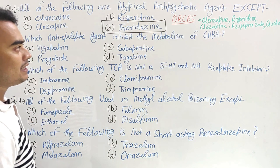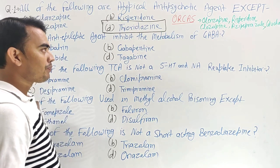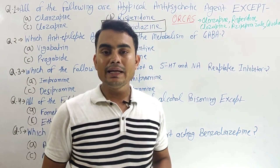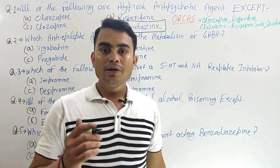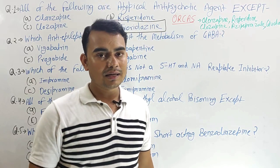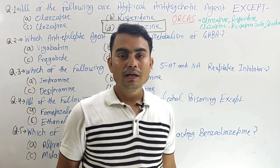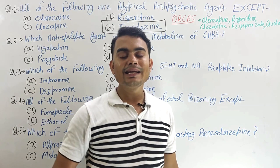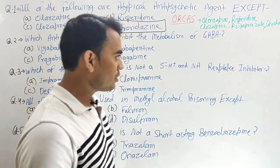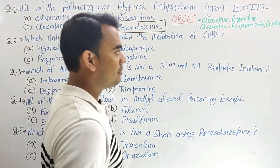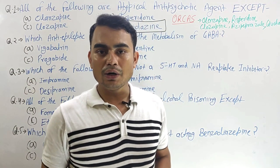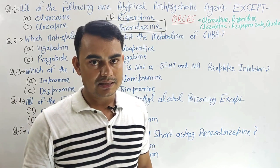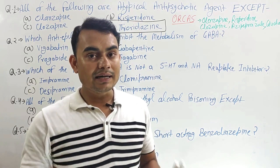Next question: which antiepileptic agent inhibits the metabolism of GABA? In epilepsy treatment, we mainly find three drug classes: drugs that increase GABA activity, reduce sodium activity, and inhibit calcium activity. Under the GABA class, we need to find the drug that inhibits GABA metabolism. The metabolism of GABA is mainly carried out by the enzyme GABA transaminase.